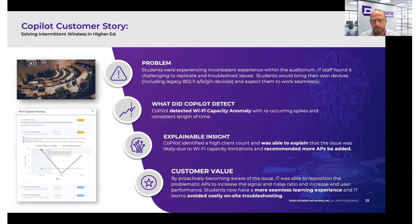CoPilot was able to detect that this was a Wi-Fi capacity anomaly. There were recurring spikes of this issue at consistent lengths of time. It was able to explain that the issue is related to Wi-Fi capacity, and that they may actually want to add some more access points in the auditorium — the AP deployment wasn't dense enough.